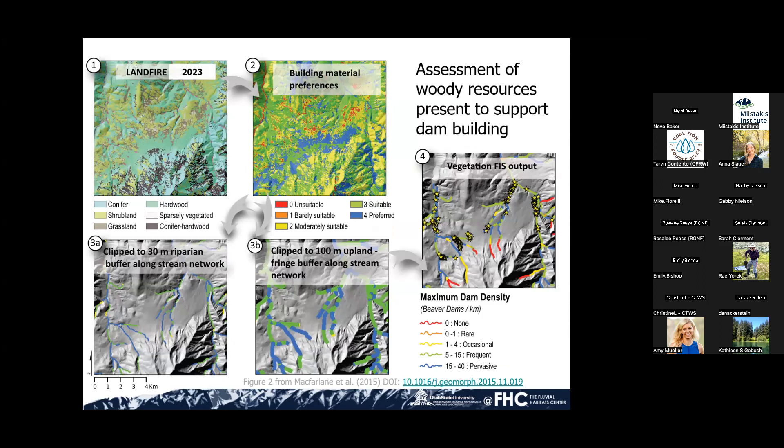This slide depicts that LandFire data classification. Based on the literature, we can assume some preferences for beaver for dam building material, and we code this from zeros to four as far as beaver preferences. We clip the data by 30 and 100 meters, so most of beaver's utilization of vegetation is within about 30 meters of the stream — because they're prey, they're not good on their feet, and they're very leery of being out of the water.